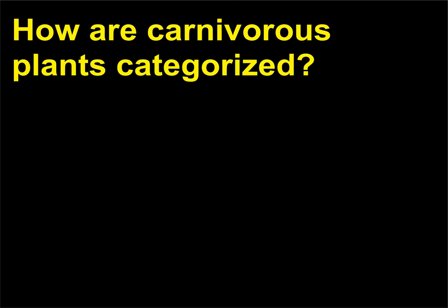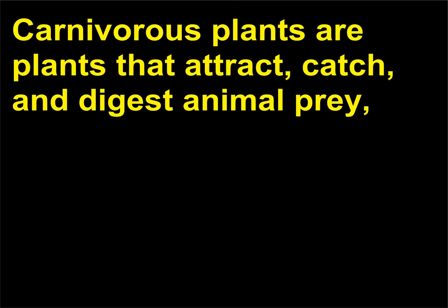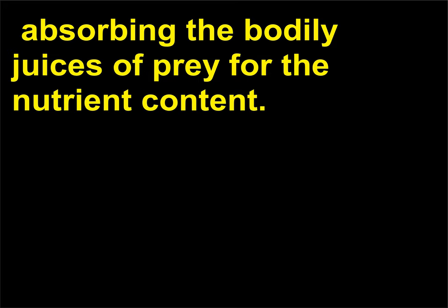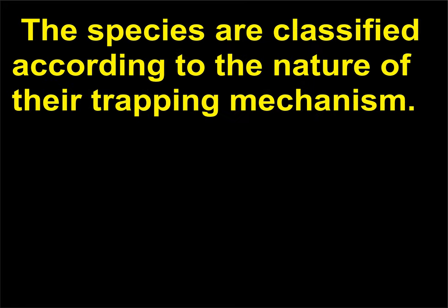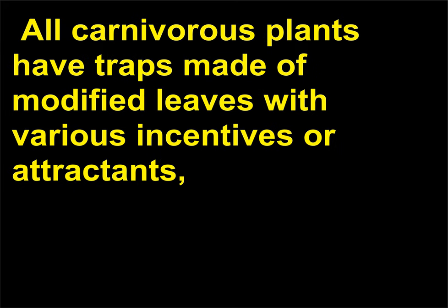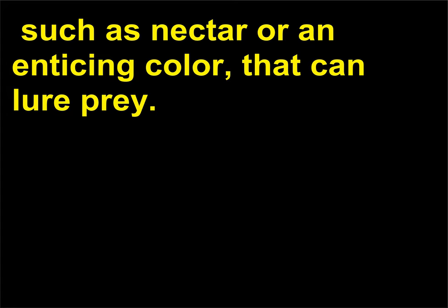How are carnivorous plants categorized? Carnivorous plants are plants that attract, catch, and digest animal prey, absorbing the bodily juices of prey for their nutrient content. There are more than 400 species of carnivorous plants, classified according to the nature of their trapping mechanism. All carnivorous plants have traps made of modified leaves with various incentives to attract prey, such as nectar or an enticing color.